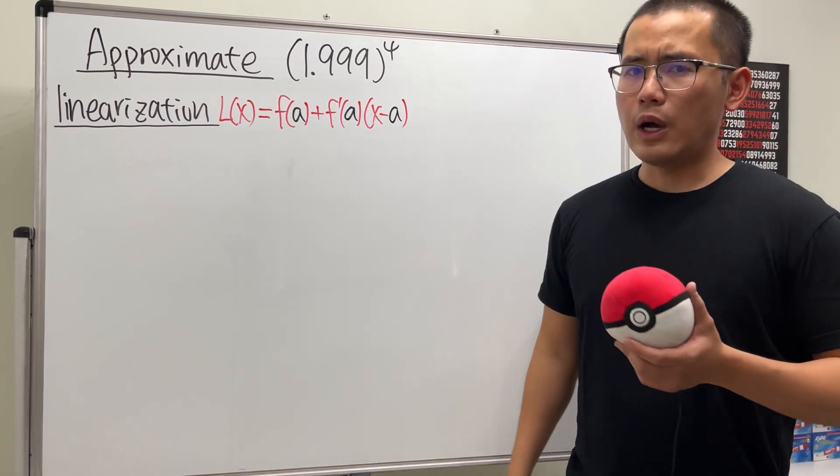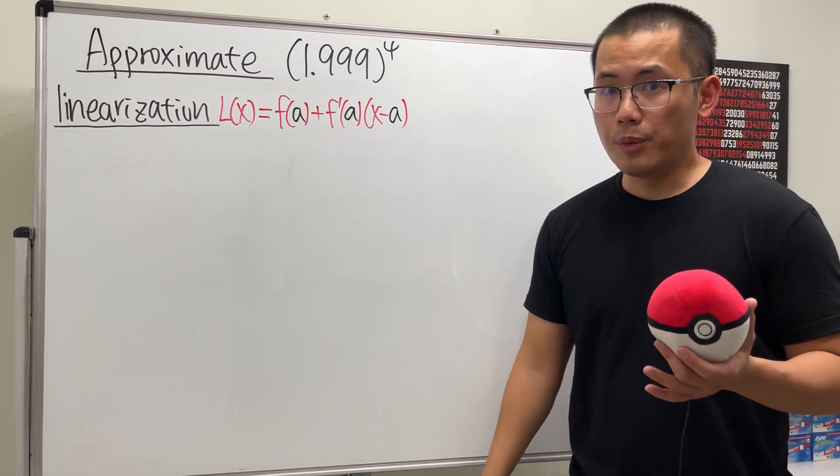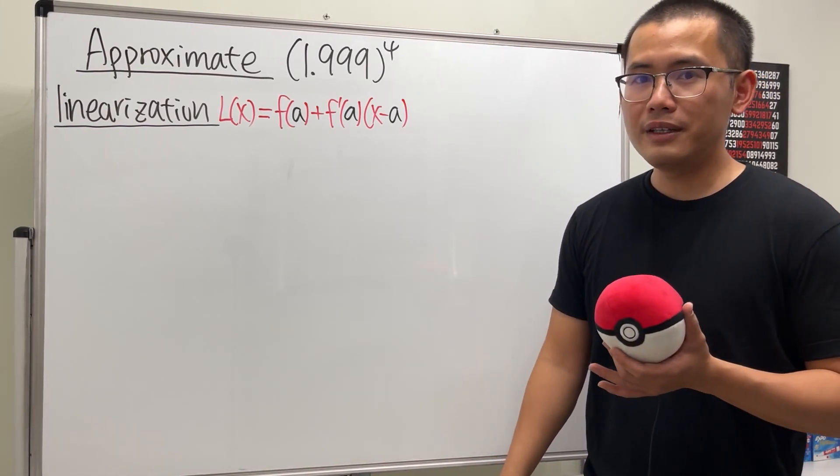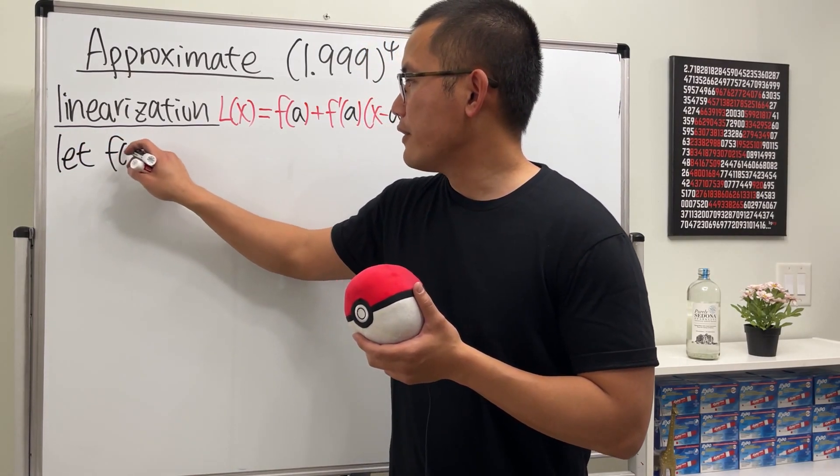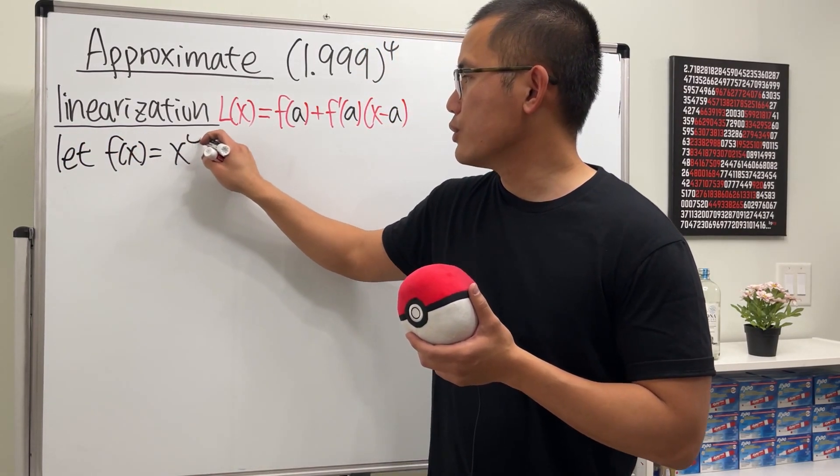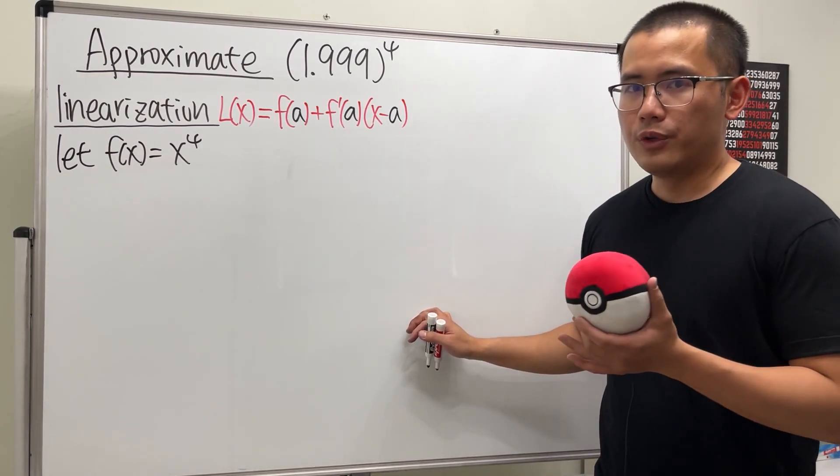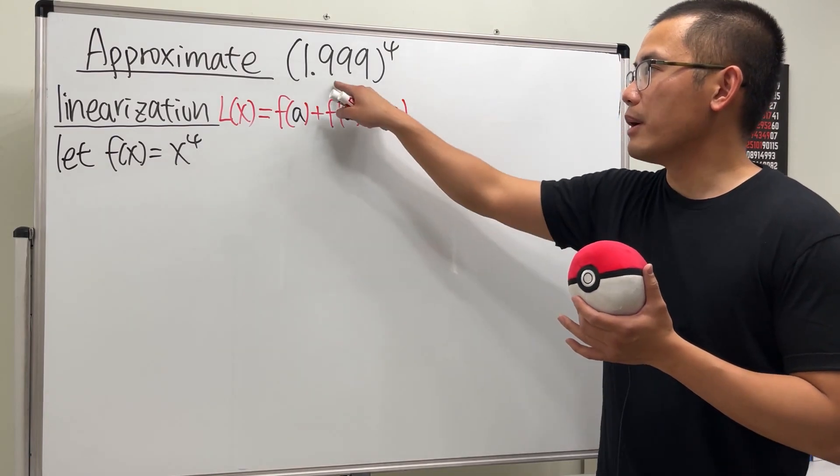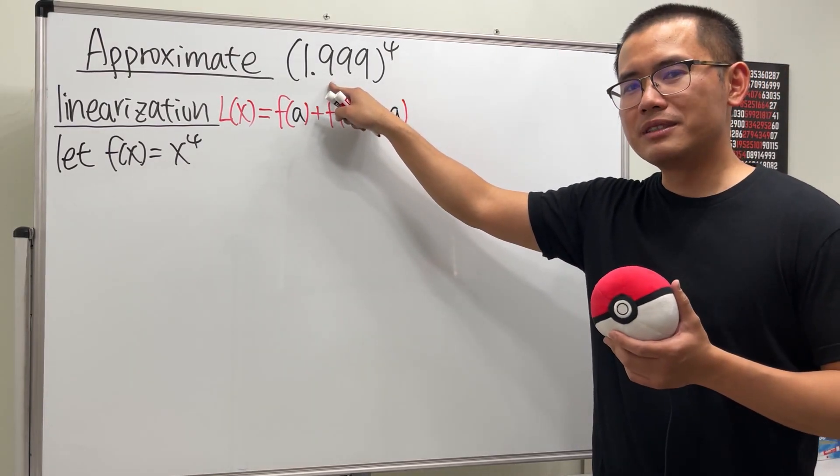What function are we talking about? Well, we see that we have this to the fourth power, so it would be a good idea to define our function to be f(x) = x^4. And for the a value, well, how do we find that? Just think about it. Why is this so hard? Because of the decimal. How can we make this slightly easier? Imagine if this is a 2, right?